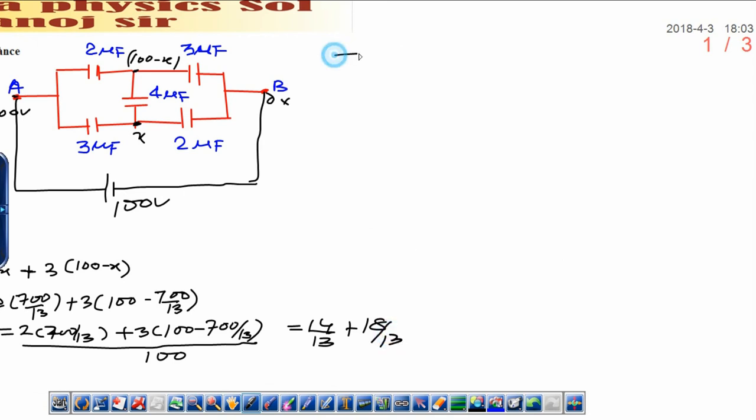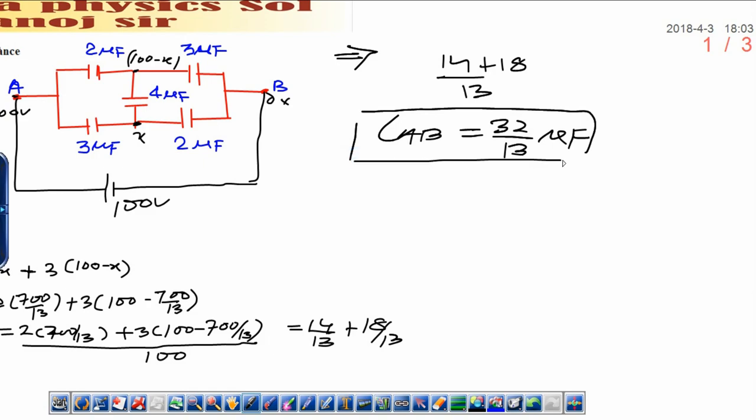Now further you can simplify it. What is LCM? 13 is LCM. 14 plus 18. Final answer between A and B capacity is 32 upon 13 microfarad. This will be the answer.